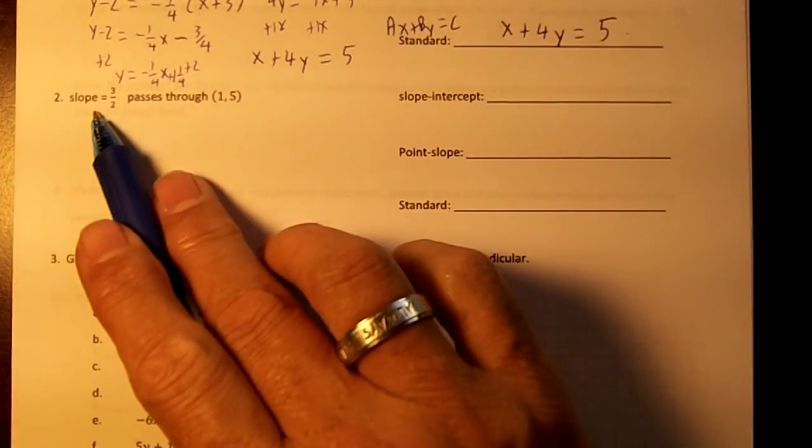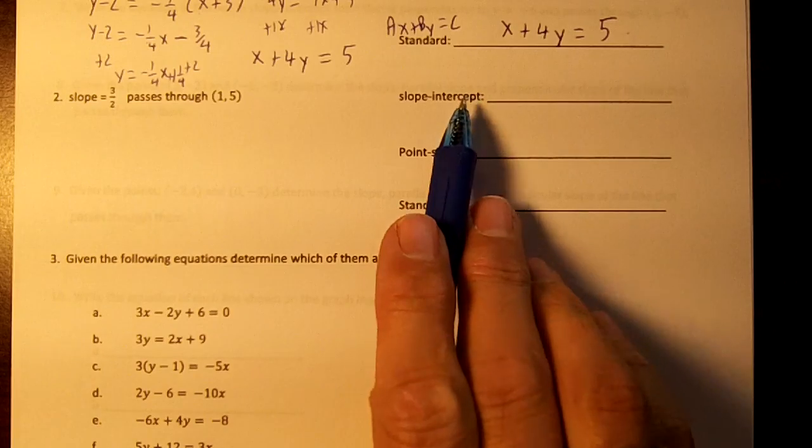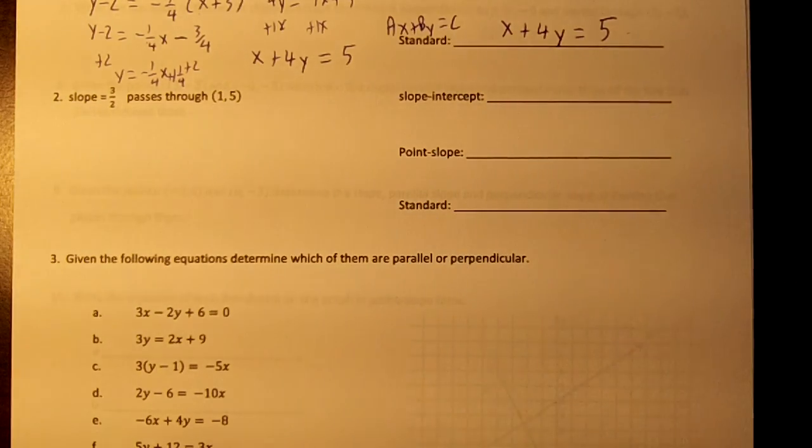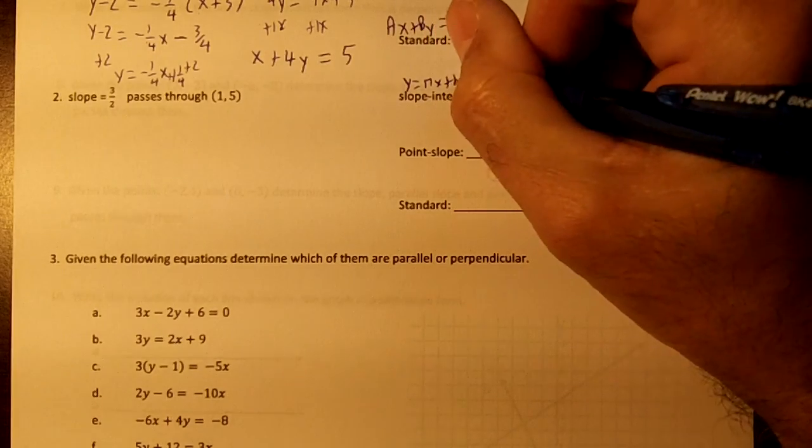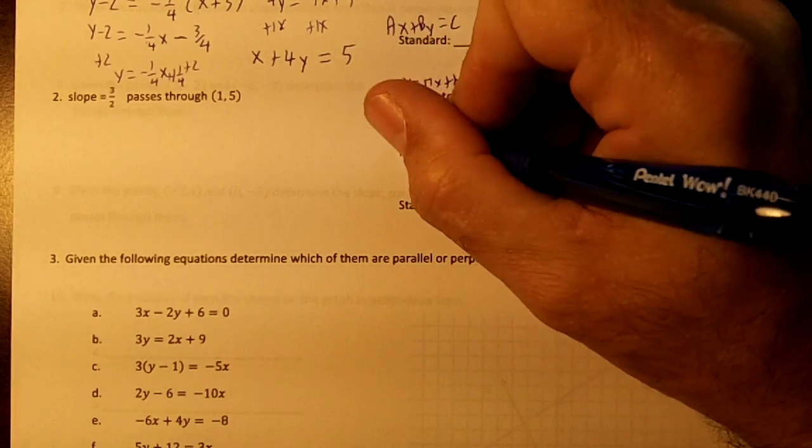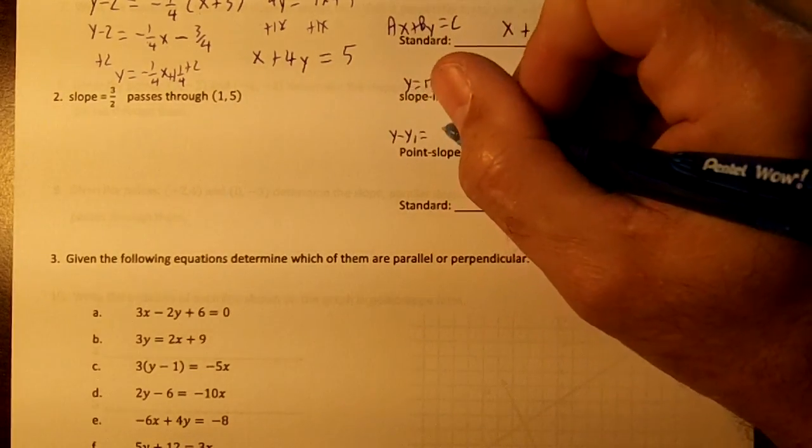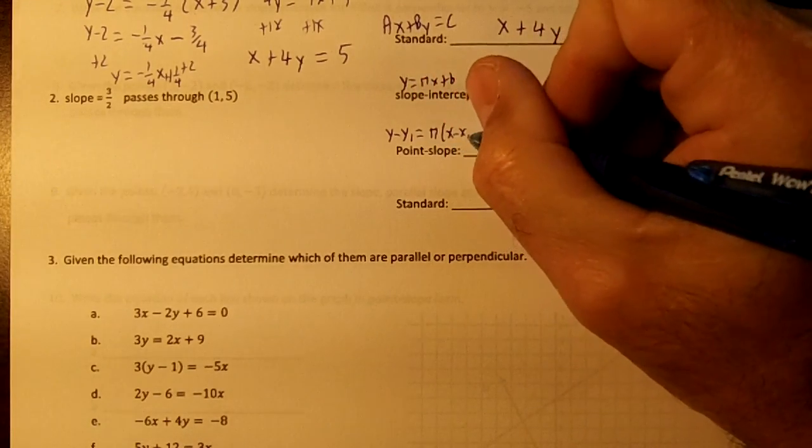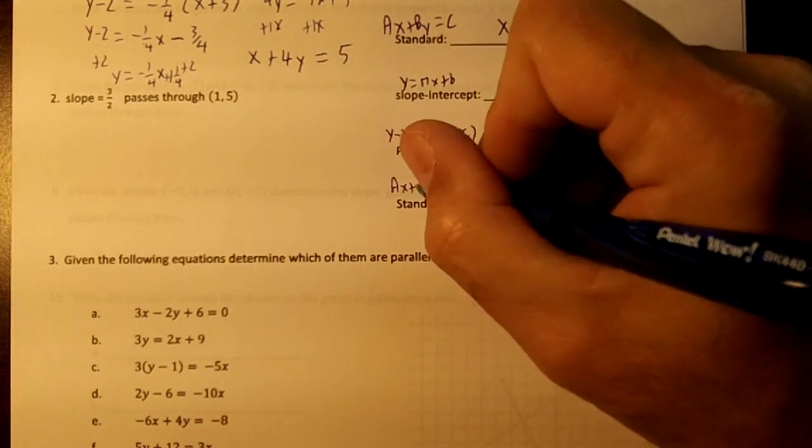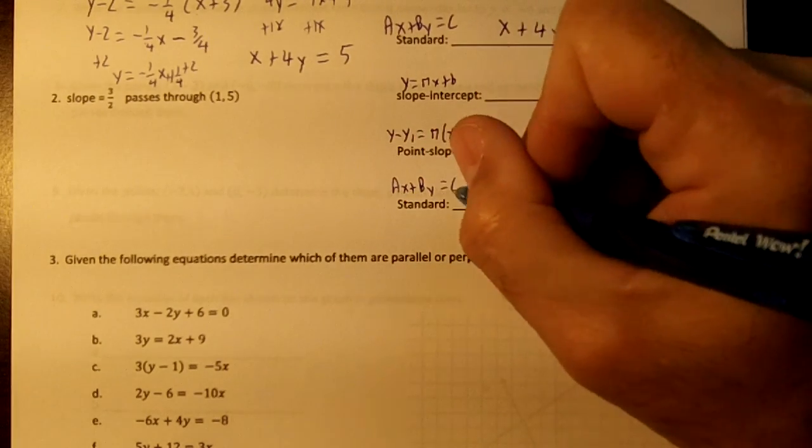Number 2, same thing. We're given a slope and a point, and we've got to write slope-intercept, point-slope, and standard. The slope-intercept is y equals mx plus b. The point-slope is y minus y1 equals m parentheses x minus x1. And our standard form is ax plus by equals c.